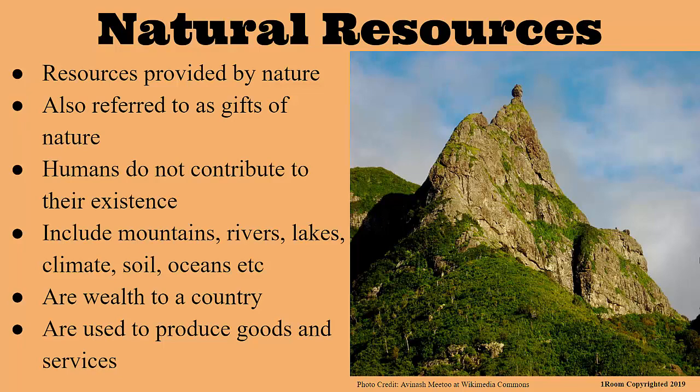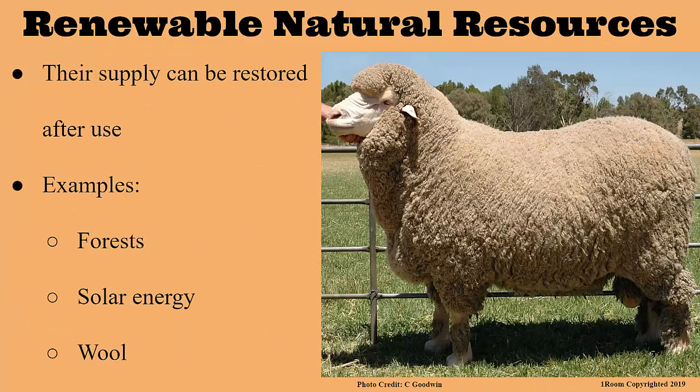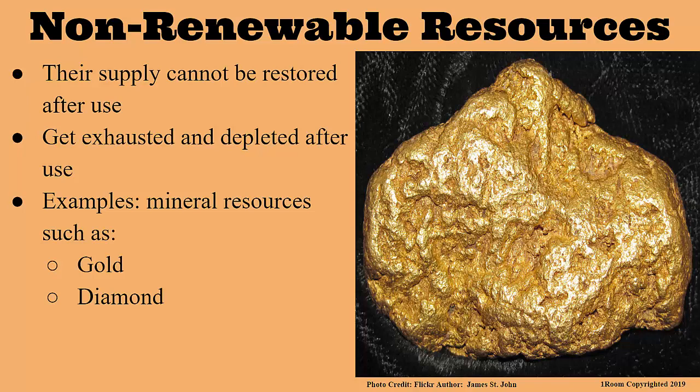Natural resources can be used as they are or for further production of goods and services, and they determine how people living around them live their lives. People living around lakes and rivers tend to be fishermen; those in cool and wet climates become farmers; those near mineral areas become miners. Natural resources can be renewable or non-renewable. Renewable resources restore themselves after use and do not get depleted — forests and solar energy are good examples. Non-renewable resources, like mineral resources, cannot be replaced once used; they get depleted, so when a mine is exhausted, a new one must be found.